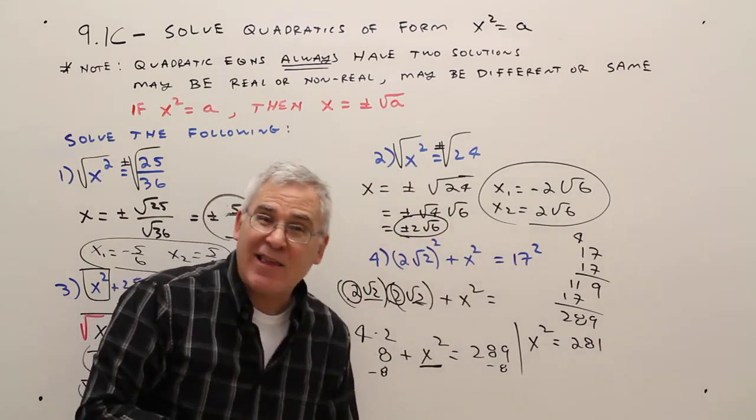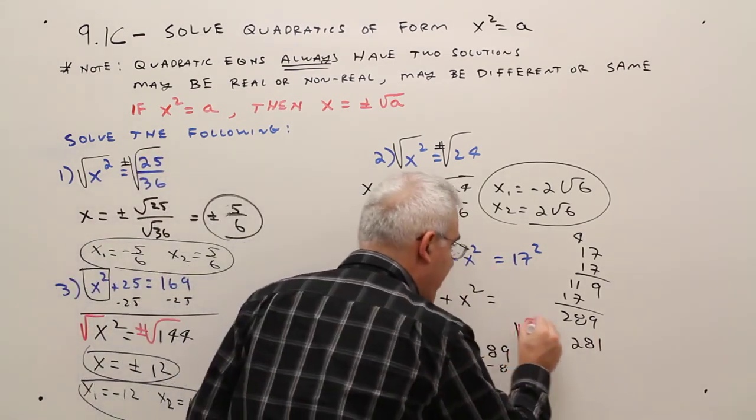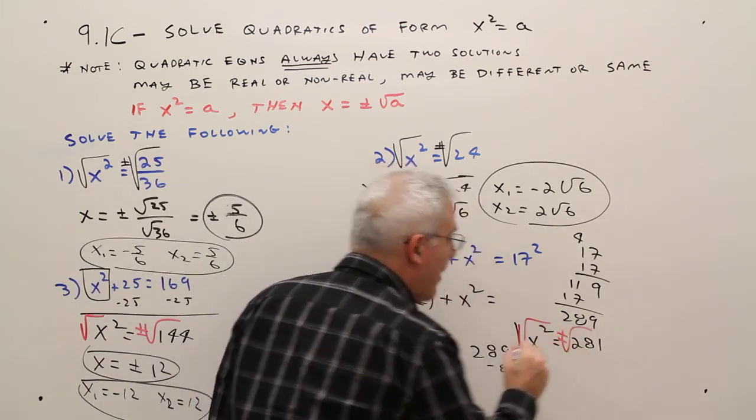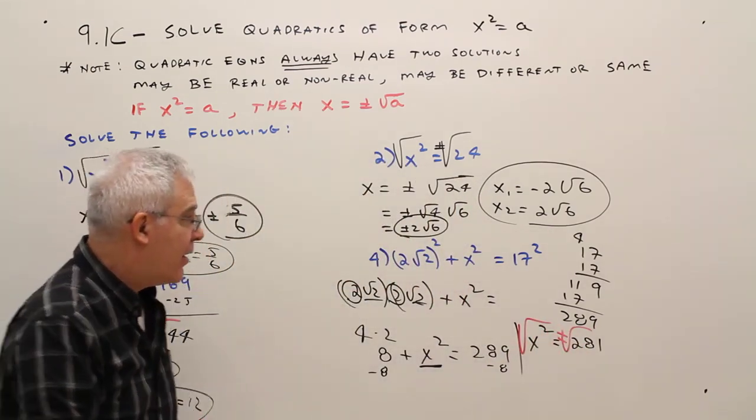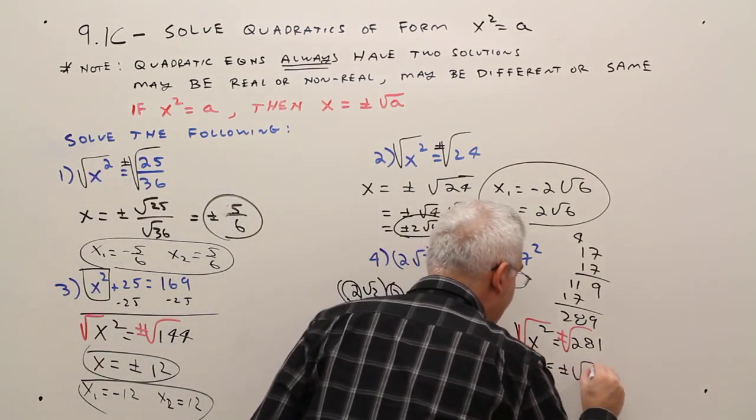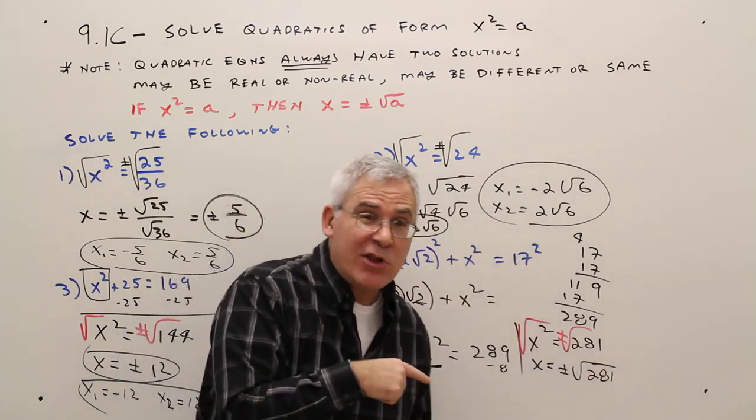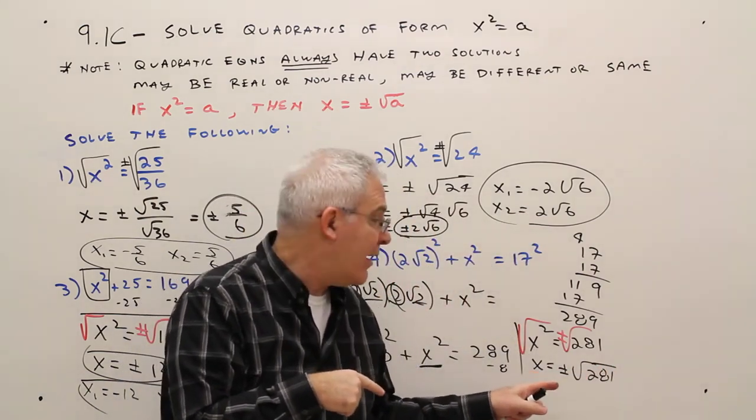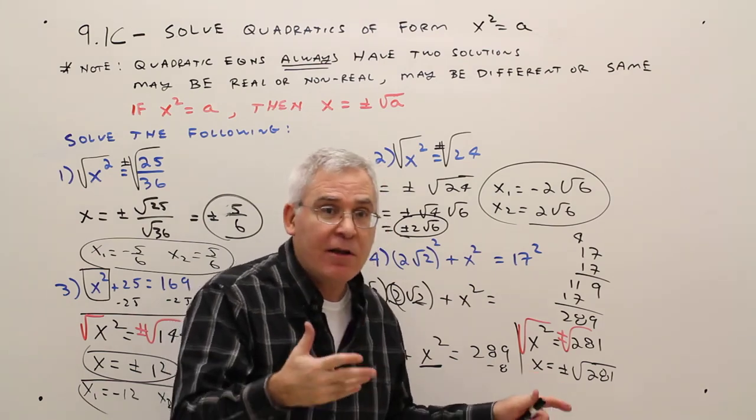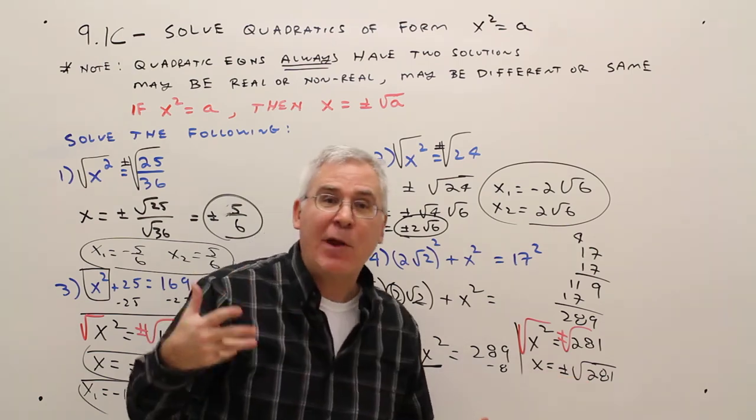And once I get into that form, then I can take the square root of the left side and plus or minus the square root of the right side. So I'll get X equals plus or minus the square root of 281. You do want to check to see if you can simplify that. You can't. If you did the prime factorization, you wouldn't find a pair of factors.